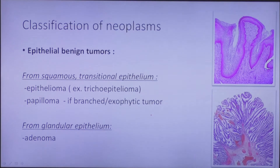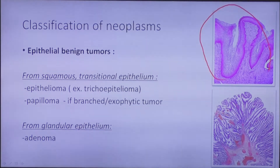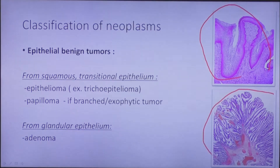Tumors of epithelial origin are given a variety of names based on their outstanding characteristics. A benign tumor of the squamous epithelium may be called simply epithelioma, or when it is branched or exophytic, it can be called papilloma. A benign tumor arising from glandular epithelium, as seen in the picture, is called adenoma.